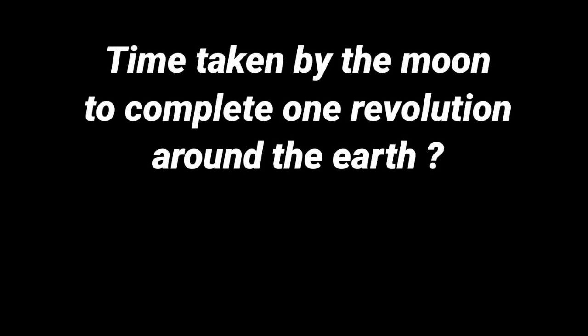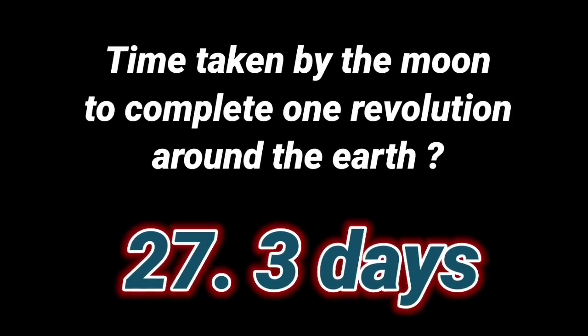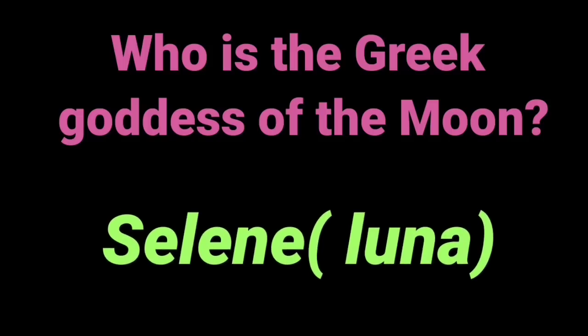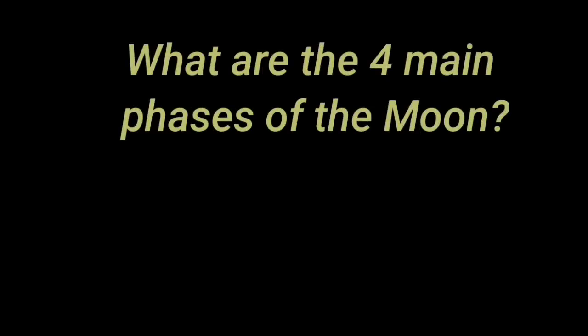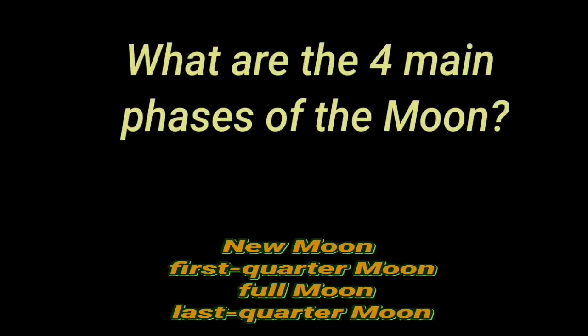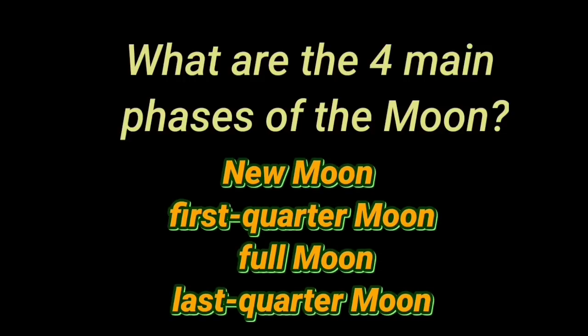Time taken by the moon to complete one revolution around the earth? Twenty-seven point three days. Who is the Greek goddess of the moon? Selene/Luna. What are the four main phases of the moon? New moon, first quarter moon, full moon, and last quarter moon.